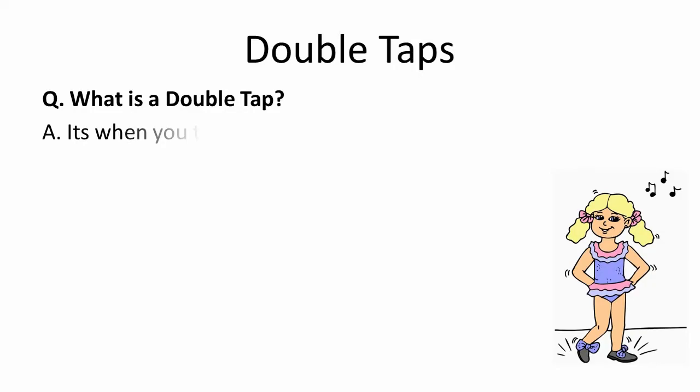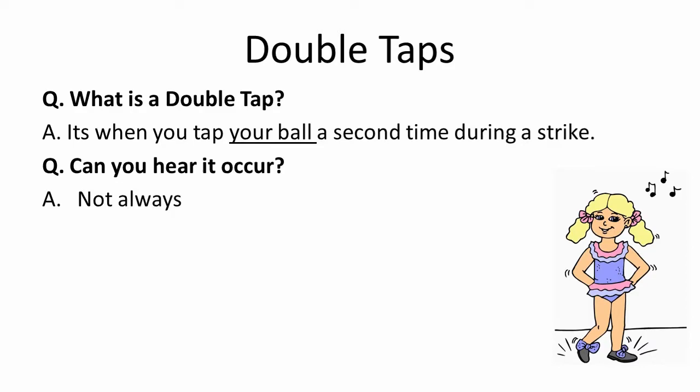So what is a double tap in croquet? The term double tap describes when your mallet contacts your ball a second time during a strike. The taps are so close together that it is near impossible to detect by sound alone.